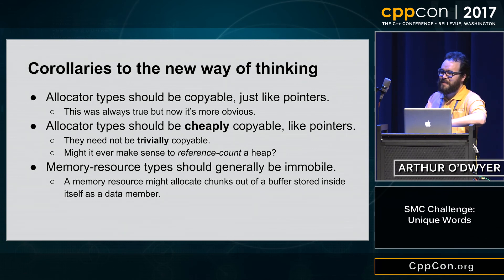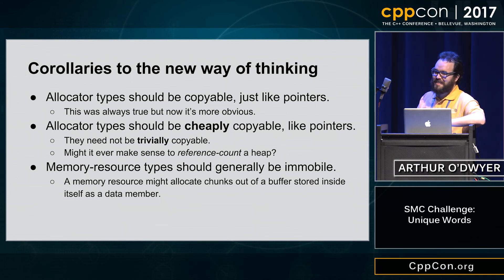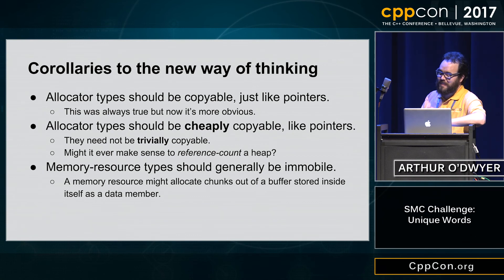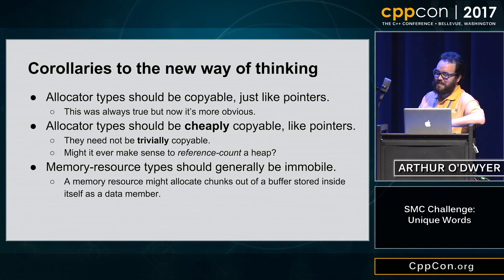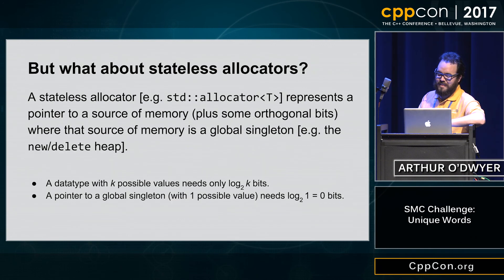You can have an allocator that's not in a container. You can have an allocator that's not a heap — it's merely a handle to a heap. Allocator types should be copyable. This has always been true. It's still true. They should be copyable just like pointers — this was always true, now it's more obvious. They should be cheaply copyable. Memory resource types should be immobile.